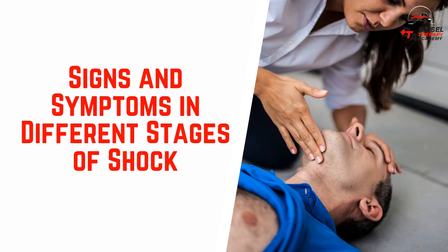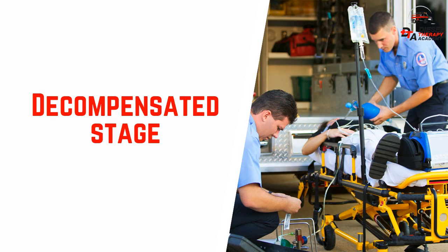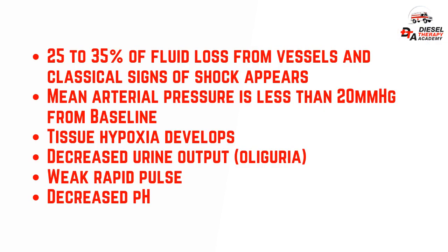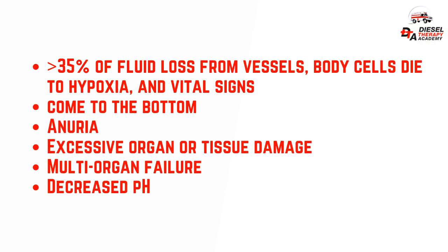Signs and symptoms in different stages of shock. Compensated stage: 15–25% of fluid loss from vessels, with subtle signs of shock. Mean arterial pressure will be less than 10–15 mmHg from the baseline. Increased renin and antidiuretic hormone secretion. Vasoconstriction. Increased heart rate. Decreased pH. Decompensated stage: 25–35% of fluid loss from vessels and classical signs of shock appear. Mean arterial pressure is less than 20 mmHg from baseline. Tissue hypoxia develops. Decreased urine output. Oliguria. Weak rapid pulse. Decreased pH. Irreversible stage: greater than 35% of fluid loss from vessels, body cells die due to hypoxia, and vital signs reach critical lows. Anuria. Excessive organ or tissue damage. Multi-organ failure. Decreased pH.